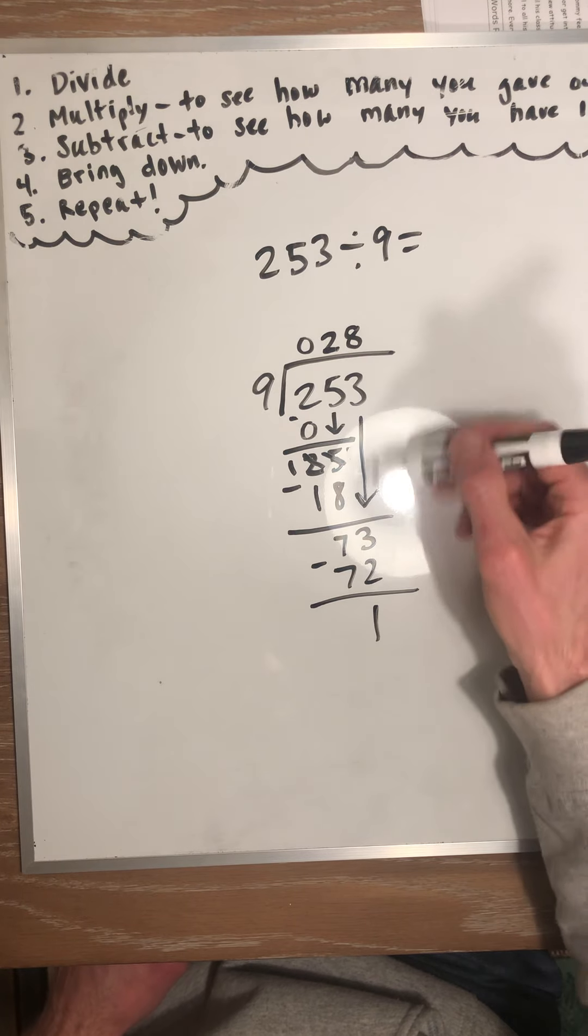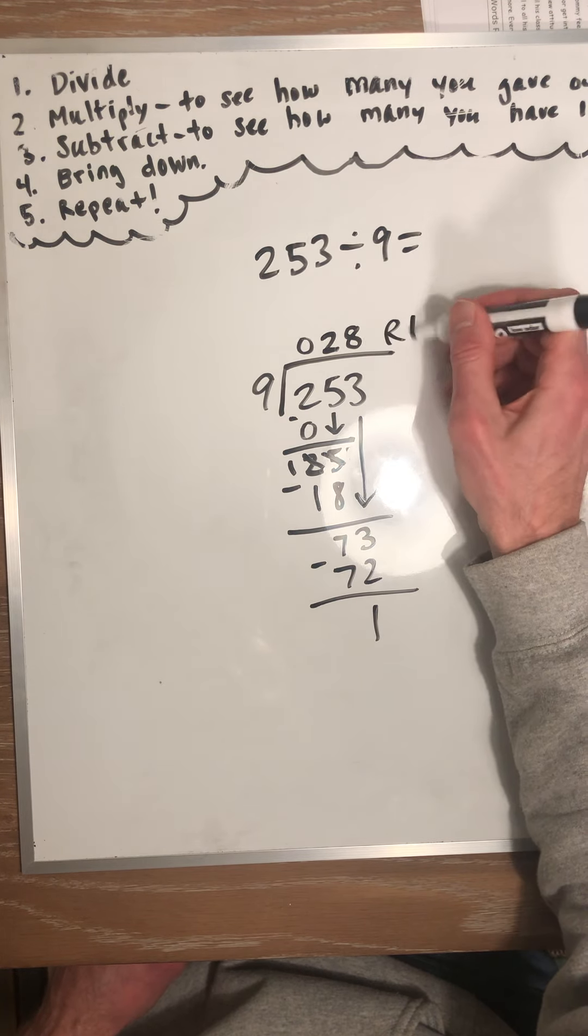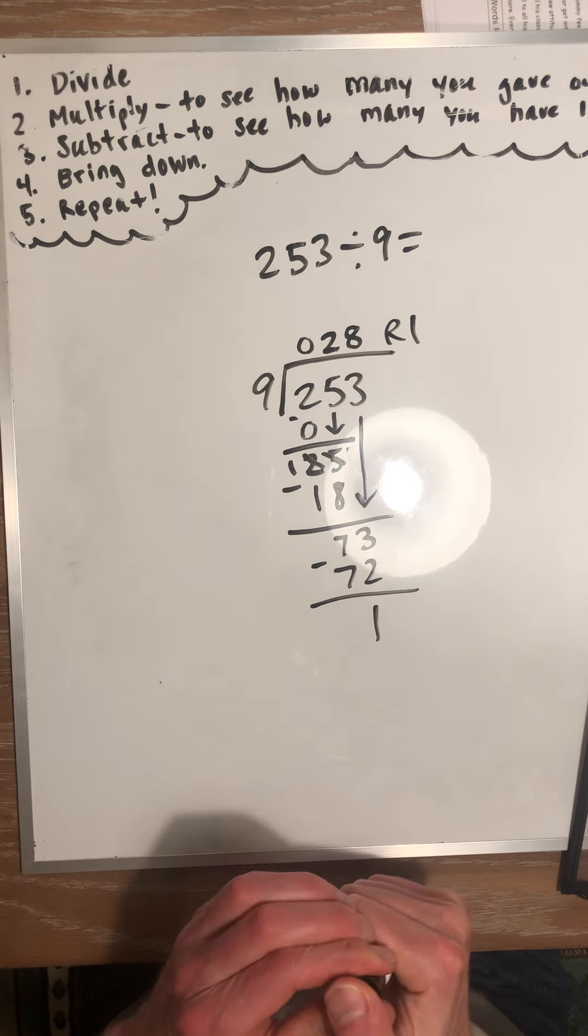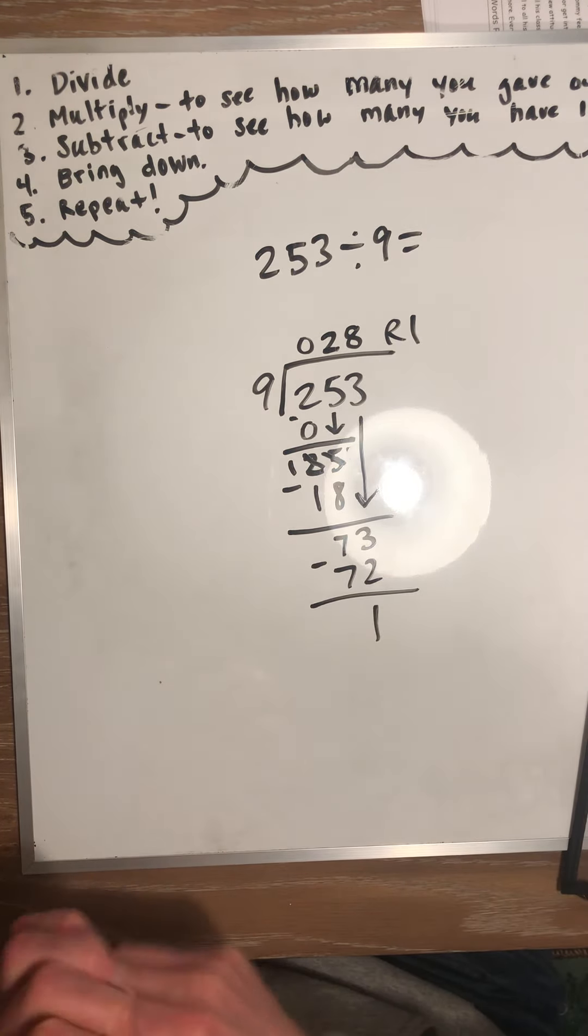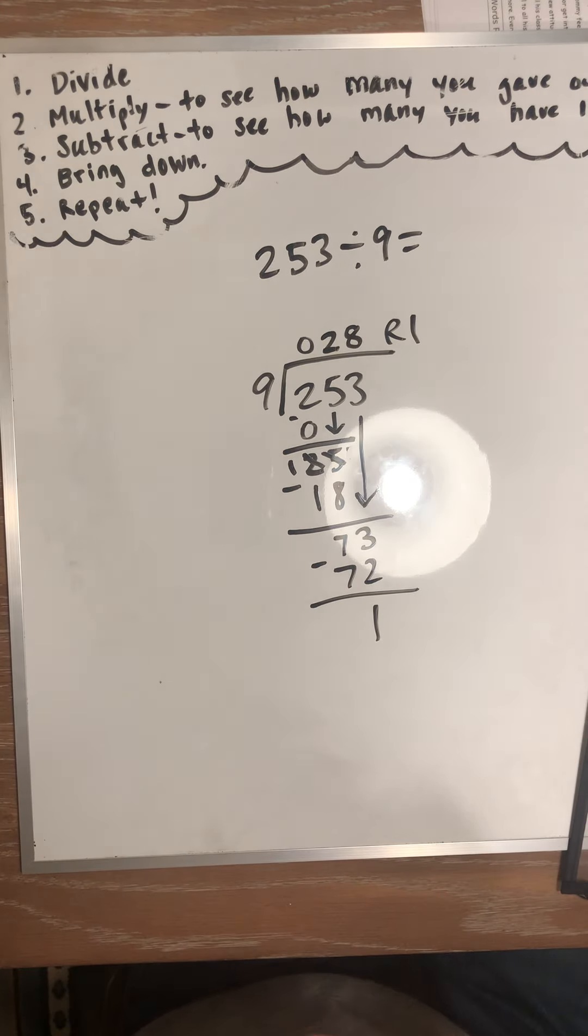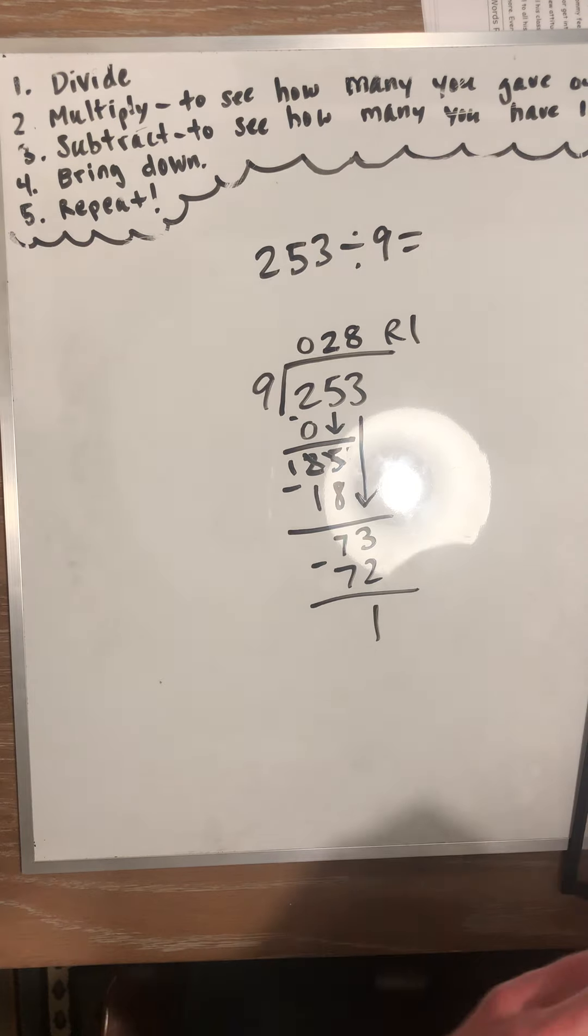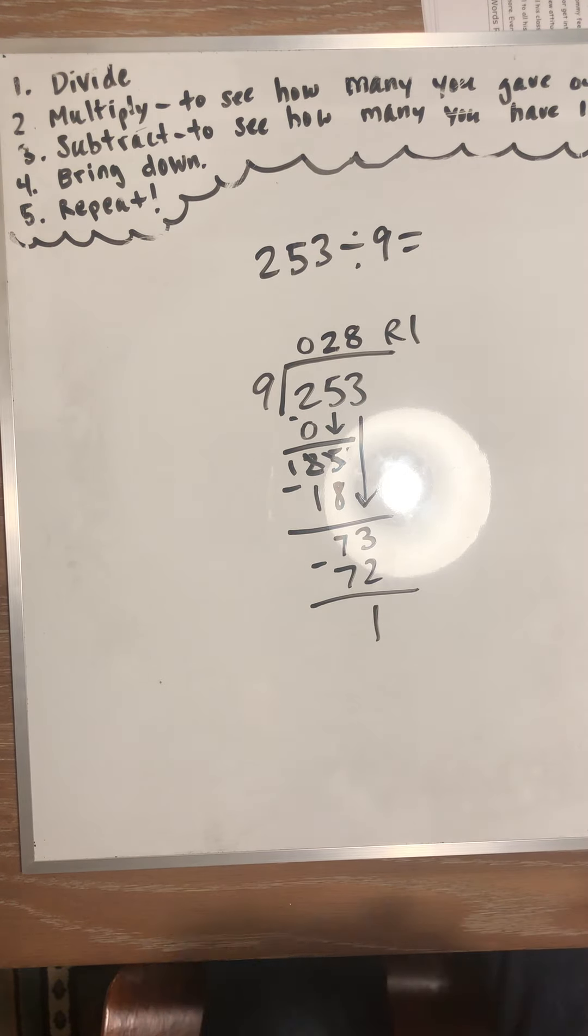So, that's the remainder. Because we already gave out the ones. We've got 1 left over. So, if you had 253 pancakes, you had 9 people come over, each person would get 28 pancakes. And you'd have 1 left over that maybe you could eat if you're hungry. Alright, you guys. Please finish that packet.